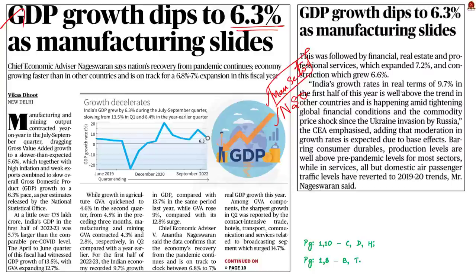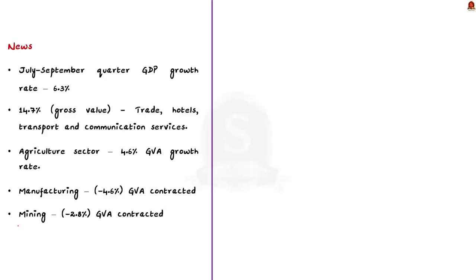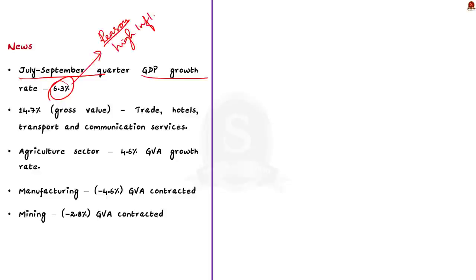In this discussion, let us see all the data mentioned in the article and revise some basic concepts. India's growth rate for the July to September quarter slipped to 6.3%. The article talks about the main reasons behind the slip — high inflation and slower exports.